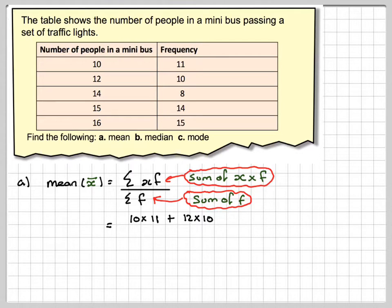So the mean will be 10 times 11, plus 12 times 10, plus 14 times 8, plus 15 times 14, plus 16 times 15. And then we have to divide by 11, plus 10, plus 8, plus 14, plus 15.